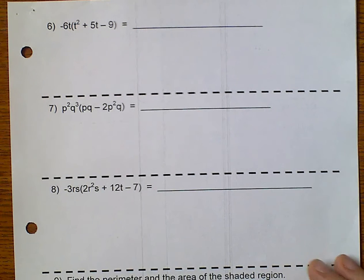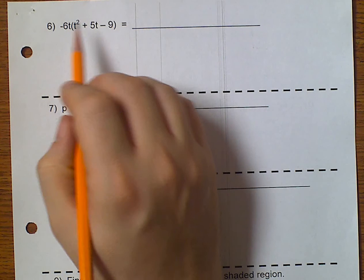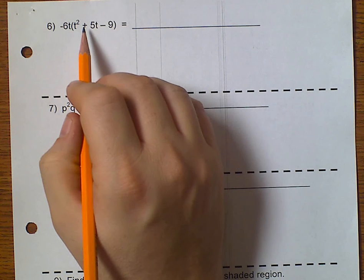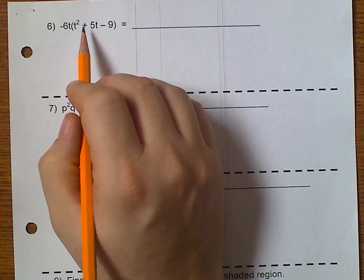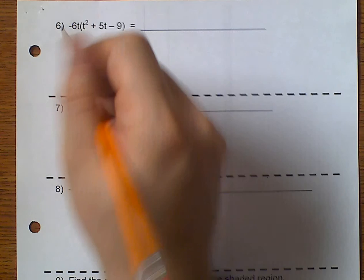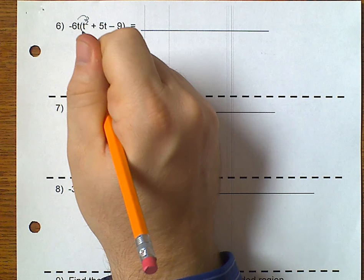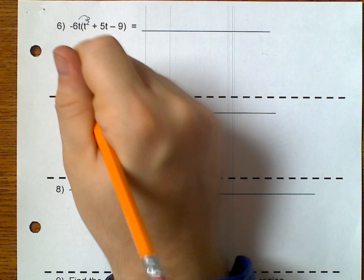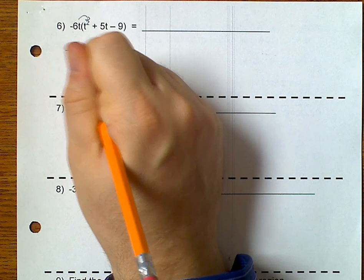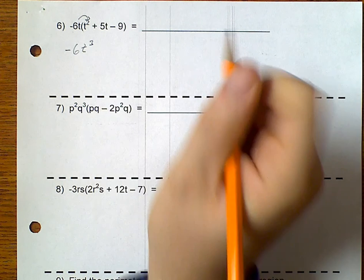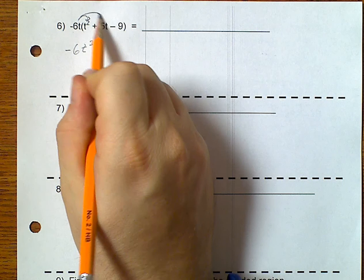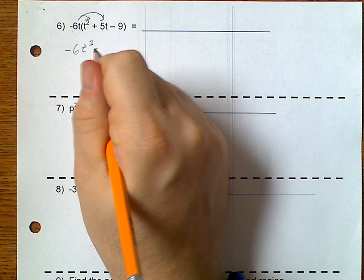Well, here I have a monomial and a polynomial. Alright, so with this monomial and a polynomial, I'm going to need to distribute. And, so, negative 6 times t squared will give me a negative 6t to the 3rd.